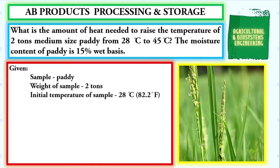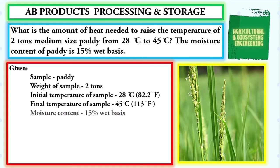We convert it to Fahrenheit and we have 82.2 degrees. The final temperature is 45 degrees Celsius. We have to convert it also to degrees Fahrenheit, and we have 113 degrees. The moisture content is 15% wet basis.